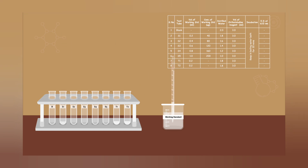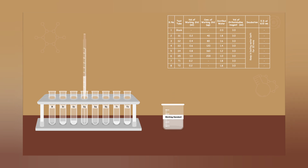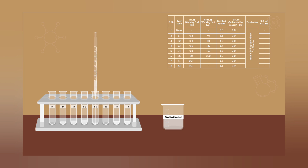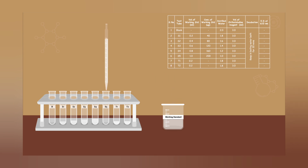You need the O-tolidine reagent, serum or plasma, glucose standard, and distilled water. The tabular column lists the reagents to be added, the volume of the reagents, the volume of the working standard, the concentration of the working standard, and the volume of the O-tolidine reagent used.